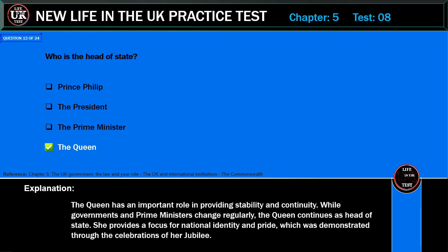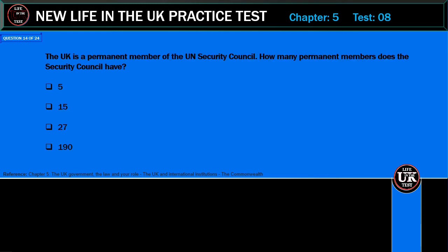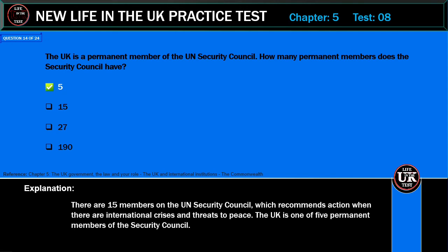The UK is a permanent member of the UN Security Council. How many permanent members does the Security Council have? 5, 15, 27, or 190? Correct answer: 5. Explanation: There are 15 members on the UN Security Council, which recommends action when there are international crises and threats to peace. The UK is one of five permanent members of the Security Council.